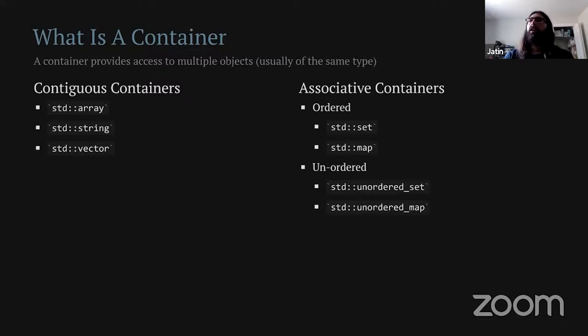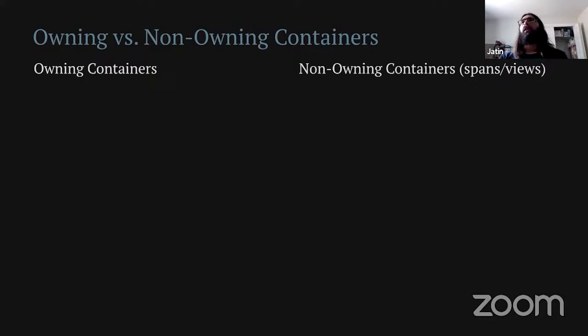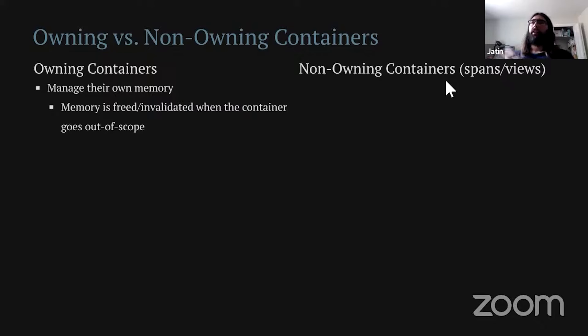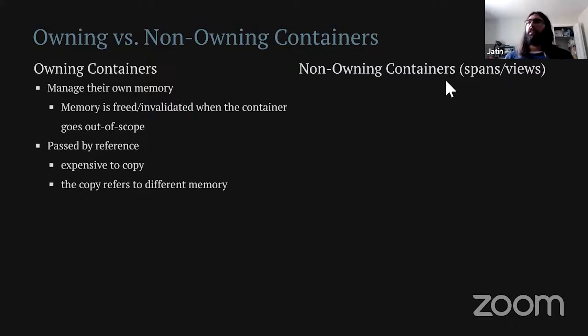For today's purposes, I think it's more useful to split our discussion between owning containers and non-owning containers. This is kind of my own definition, but the idea with an owning container is that the container manages its own memory. If the memory is allocated on the heap, when the container goes out of scope it will free that memory. Or if the memory is allocated on the stack, that memory will be invalidated when the container goes out of scope.